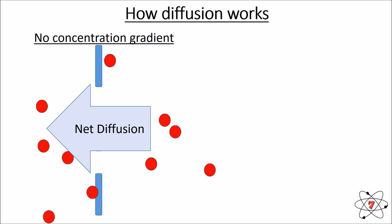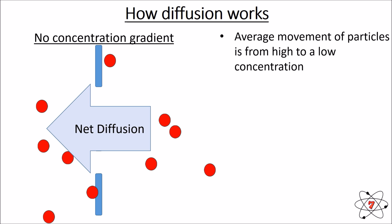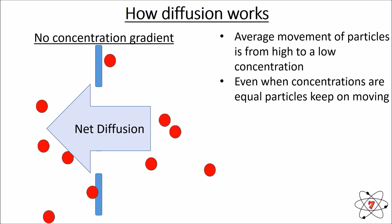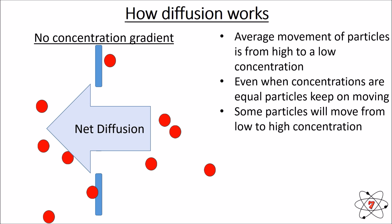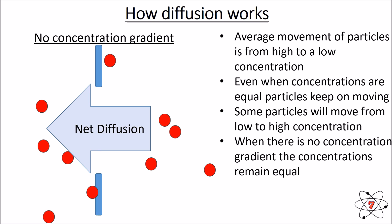When there is no concentration gradient, particles are still moving — they don't stop at all. When the gradient is even, some particles move left and some move right, but the overall concentration stays the same. There is no change in gradient. Even when concentrations are equal, particles keep moving but there is no net diffusion. Even with a concentration gradient, some particles will move from low to high, but more particles move from high to low. When there's no concentration gradient, concentrations remain equal.